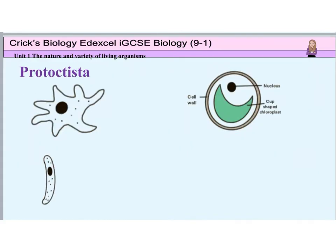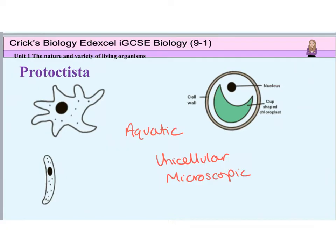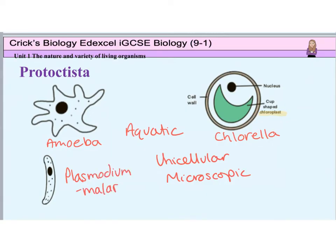Protoctista are basically everything that doesn't fit into another kingdom, so they're often called the dustbin group. They are usually aquatic and microscopic, single-celled or unicellular organisms, which can either have animal-like characteristics, like this amoeba with its outer cell membrane, or plant-like characteristics including chloroplasts, like this chlorella and some algae. A pathogenic example of a protoctista is the Plasmodium parasite, which causes malaria. It is passed from person to person via the female Anopheles mosquito when she bites somebody to get the protein for her eggs.